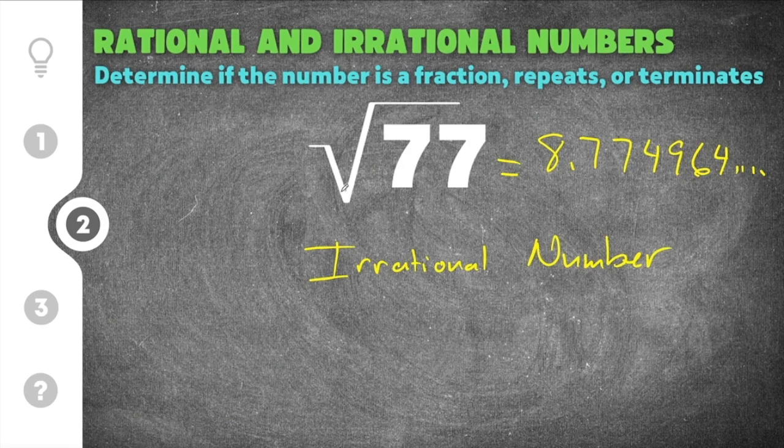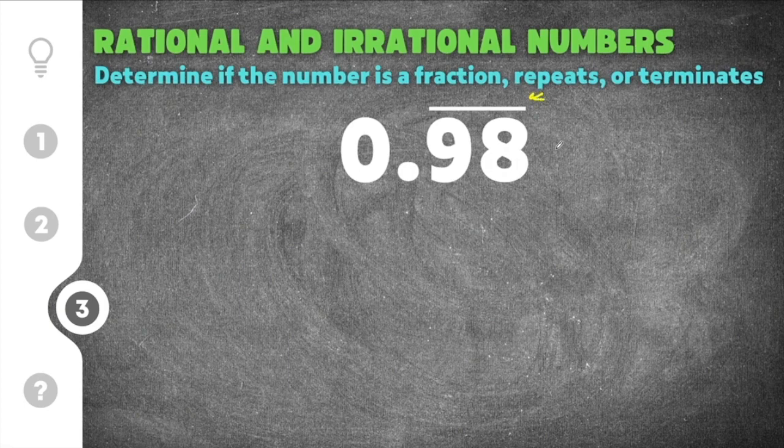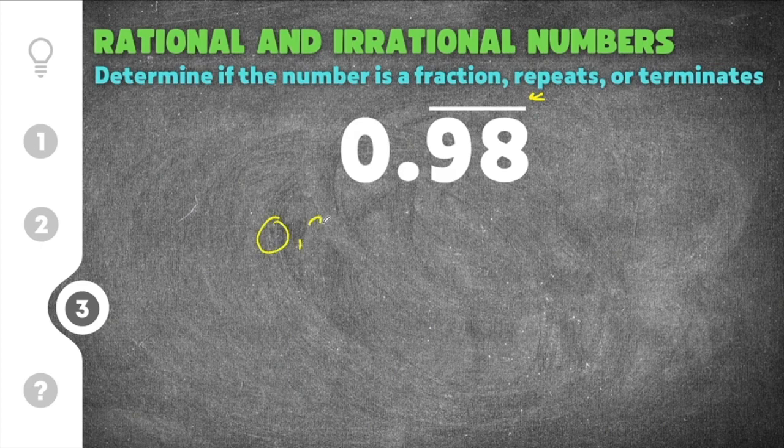And finally, our last example problem for rational and irrational numbers gives us 0.98 with a bar. Now this bar means that the decimal point goes on forever, but that it repeats. So if I were to rewrite this out,